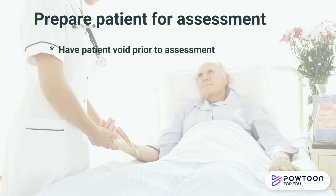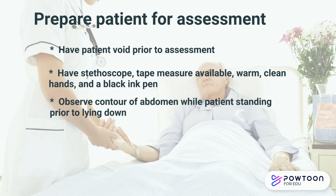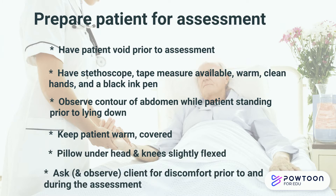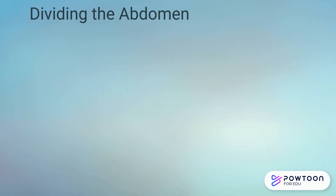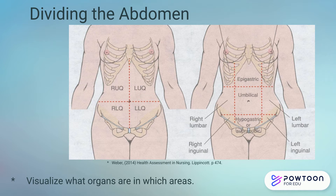Prior to performing your abdominal assessment, here's a list of things that you'll need to do with your client before proceeding. Review the four quadrants of the abdomen, as well as the different areas: the epigastric, umbilical, hypogastric, or suprapubic area. You will be responsible for these when you do your assessment, as well as on your exams.